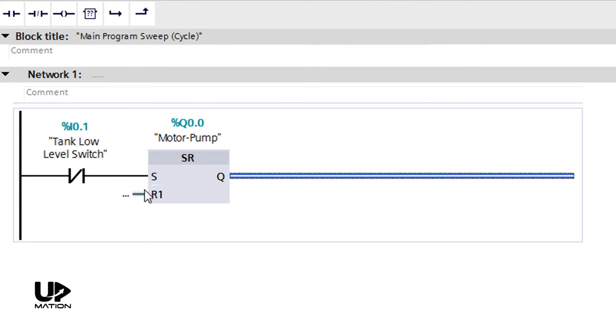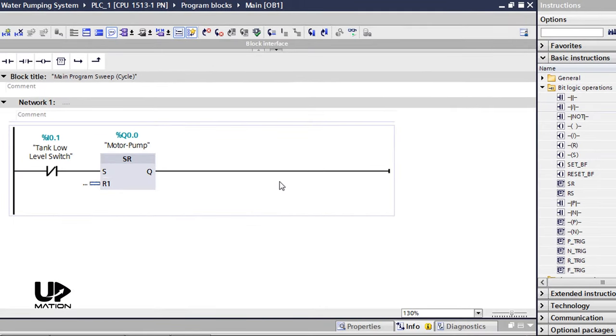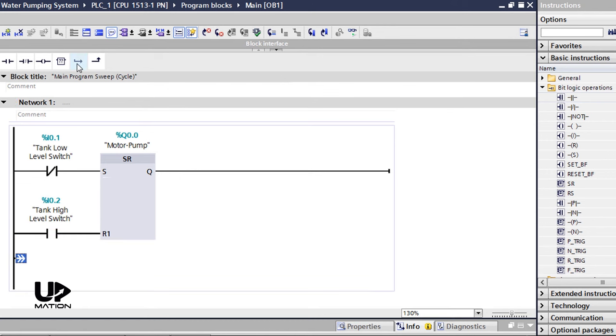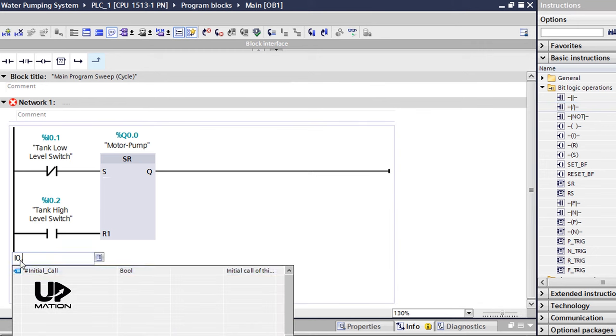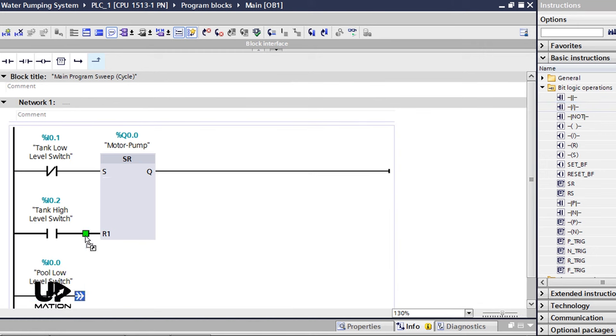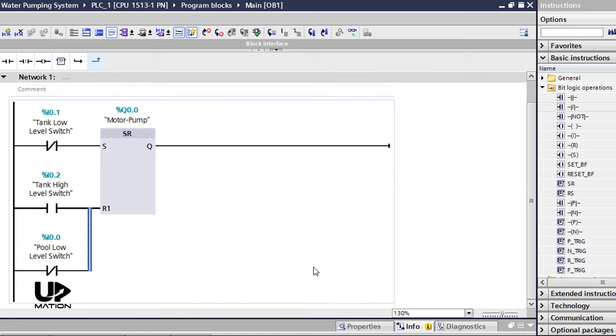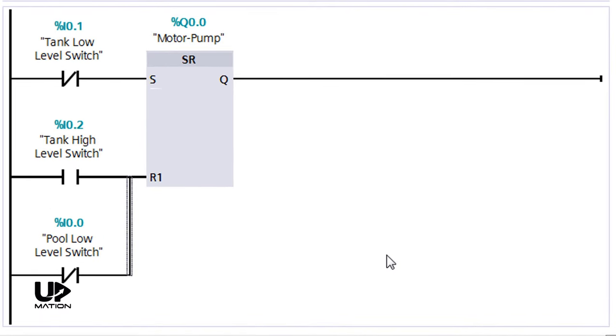As the next step, I click the reset input of the flip-flop and connect an open contact to that for the I0.2. To continue, I use the open branch and add a close contact for I0.0. This way, we will shut down the electric motor whenever the water level reaches the low level in the pool or the high level in the tank.